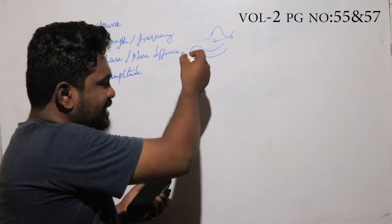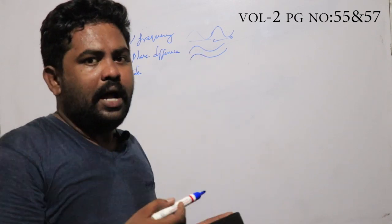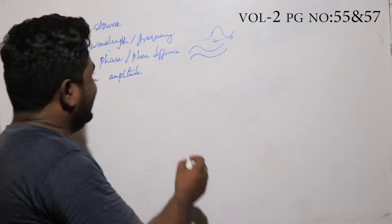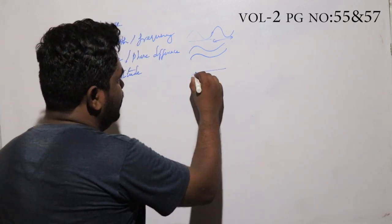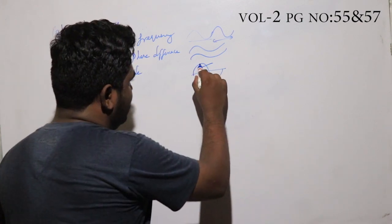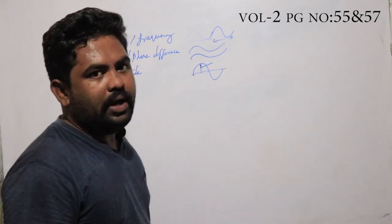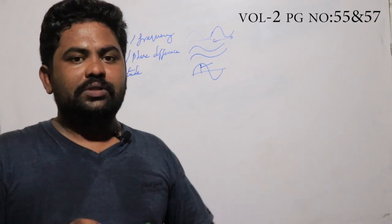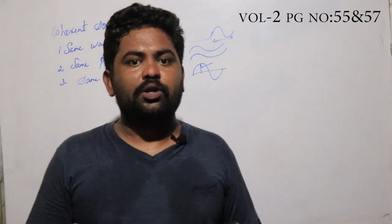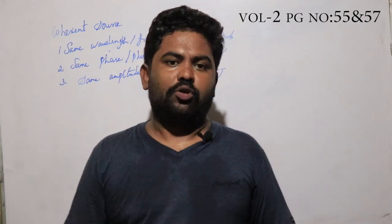For this, we need the same phase difference and the same amplitude. Amplitude is the height of the wave - the maximum displacement. So when all three conditions are met, we call it coherent sources.